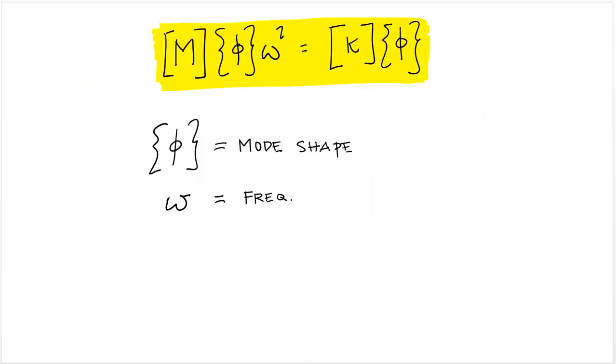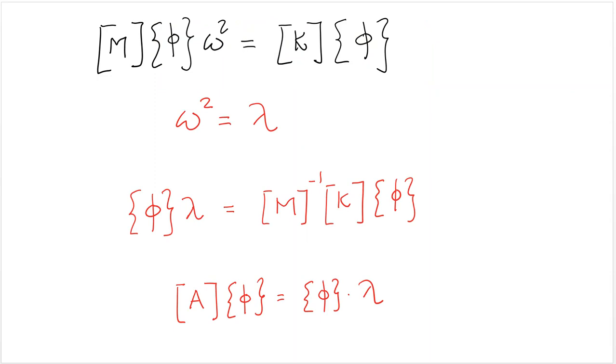The shape or phi we call mode shape and omega is a circular frequency. Now, for that equation to be true, basically we will show that it constitutes a classical eigenvalue problem. So, if we substitute omega squared by lambda, it's just a constant, then we multiply by the inverse of the mass matrix and we arrive at phi times lambda equals to M to the minus one K phi. If you notice, that looks exactly the same, in the same form as the classical eigenvalue problem, A phi equals to phi lambda, where A is a matrix, phi is a vector, and lambda is a scalar.